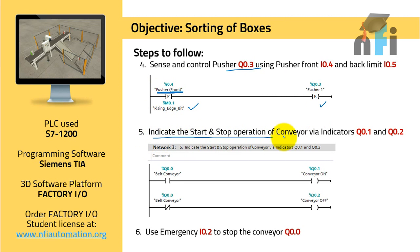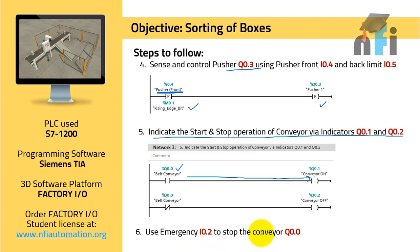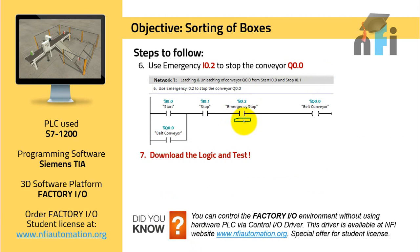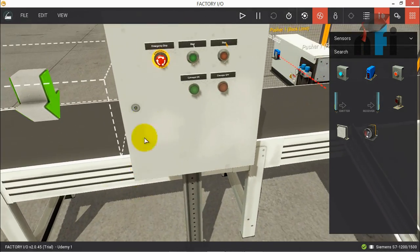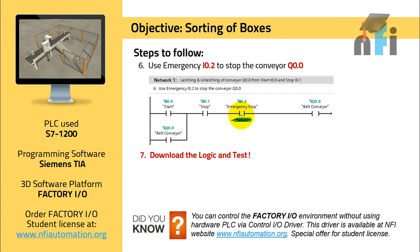We also indicate the start and stop operation of the conveyor using indicators Q0.1 and Q0.2. Since the conveyor runs on Q0.0, its NO contact actuates the green light (conveyor on) and its NC contact actuates the red light (Q0.2). For the emergency stop step, since emergency switches are NC, we include an NO contact of I0.2 in the latch rung — this remains true when the emergency is not pressed, and opens the circuit when pressed, unlatching the conveyor.